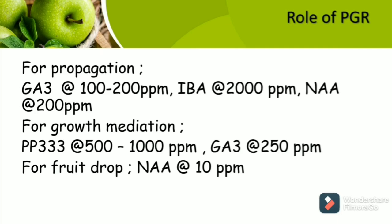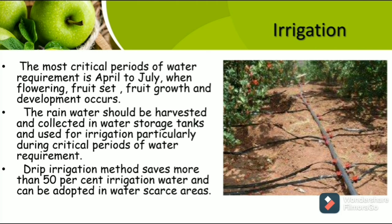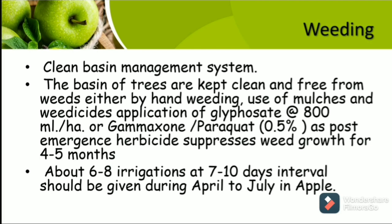Regarding irrigation: The most critical periods of water requirement are April to July, when flowering, fruit set, and fruit growth and development occur. Rainwater should be harvested and collected in water storage tanks and used for irrigation, particularly during critical periods. Drip irrigation saves more than 50% water and is adopted in water-scarce areas. For weeding, clean basin management system is used. Paraquat at 0.5% or glyphosate at 100 ml per hectare is used as post-emergent herbicide, suppressing weed growth for about 4 to 5 months. About 6 to 8 irrigations at 7 to 10 days interval should be given between April to July.